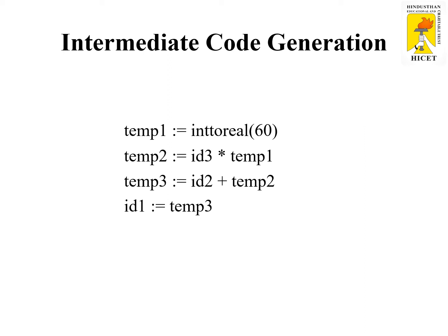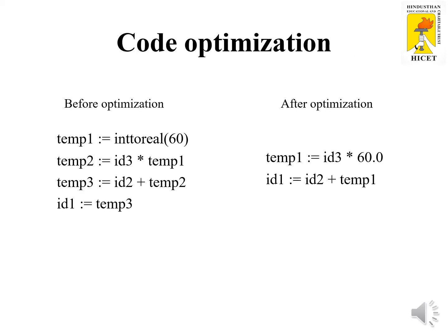These 3-address codes are of different types: triples, indirect triples, and quadruples. We will learn more about these in upcoming videos. Code optimization is the fifth phase of the compiler.